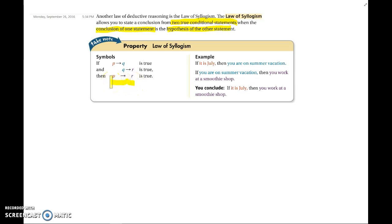Because we know that if P happens, then Q will occur. And then once Q occurs, R will happen next. So we can go ahead and say that once P occurs, R is going to be true as well, and R is going to follow.